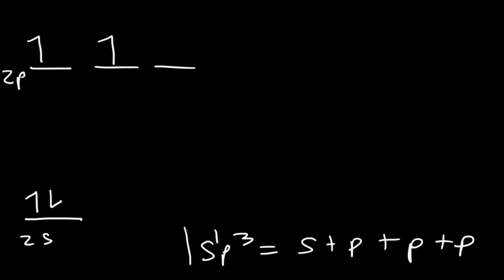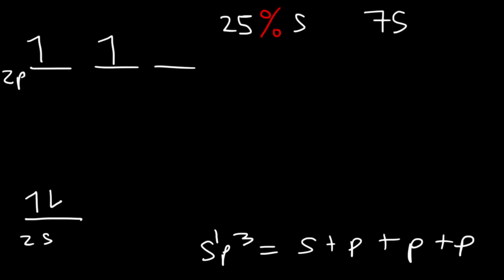To make an sp3 orbital, it requires four orbitals. One out of those four orbitals is s, which means the sp3 orbital has 25% s character. There are three p orbitals out of four, which correlates to 75% p character. So because the sp3 hybrid orbital has more p character than s, the energy level should be closer to 2p than it is to 2s.